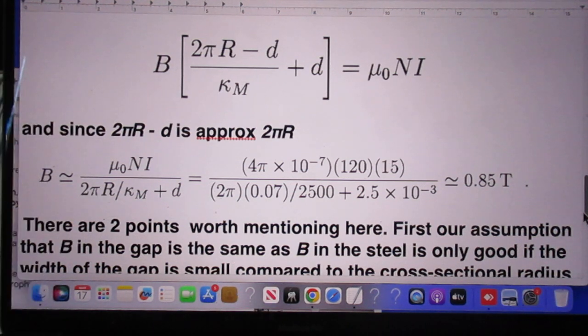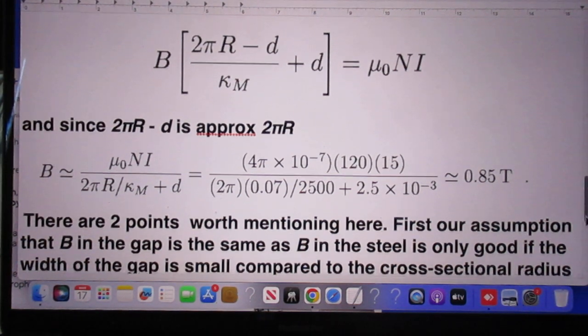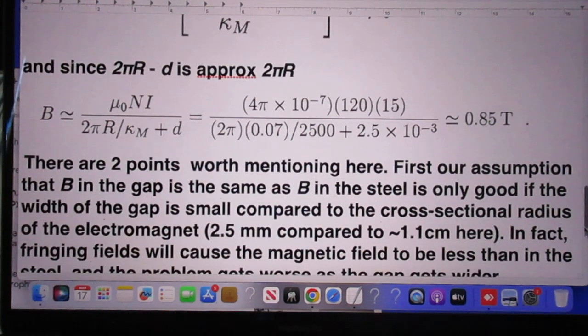You know mu zero, you know N, you know I, you know 2πR, kappa M and you know D and there you go. You see here mu zero is 4π times 10 to the minus 7. Number of turns, amperes, the 2π, 7 cm, 2500 for this one and the D is 2.5 mm. And out pops 0.85 Tesla. I think if you are more precise 0.845, we call it 0.85 Tesla.